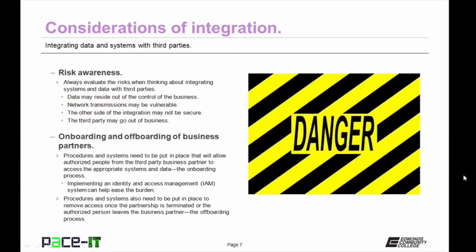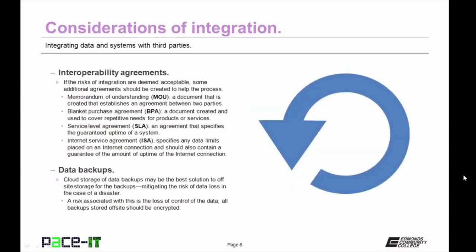The onboarding and offboarding of business partners is another consideration. Procedures and systems need to be put in place that will allow authorized people from the third-party business partner to access the appropriate systems and data within your network—this is the onboarding process. Procedures and systems also need to be put in place to remove access once the partnership is terminated or the authorized person leaves—this is the offboarding process.